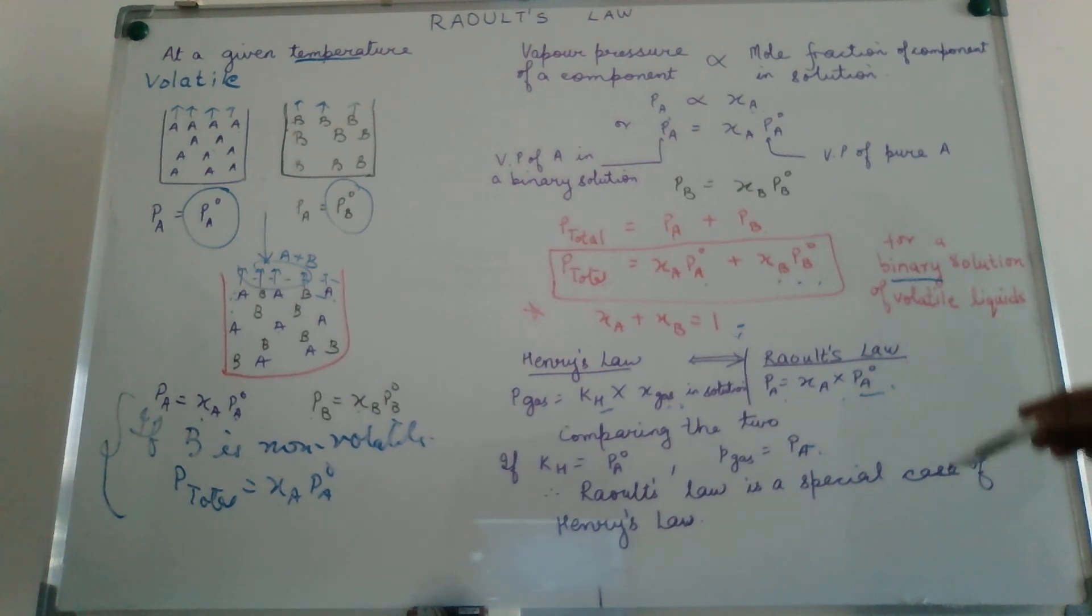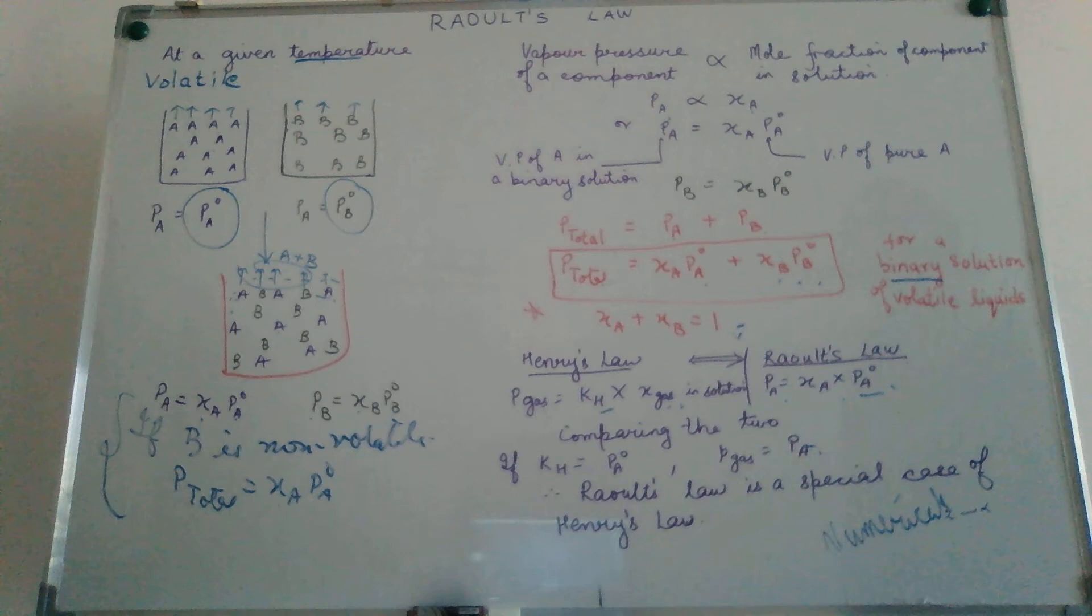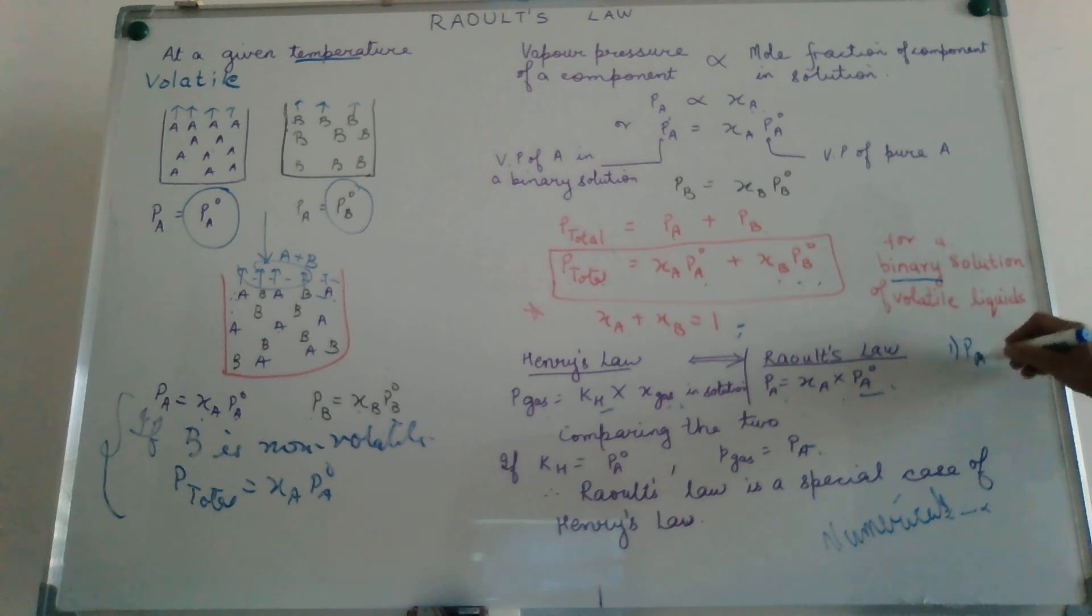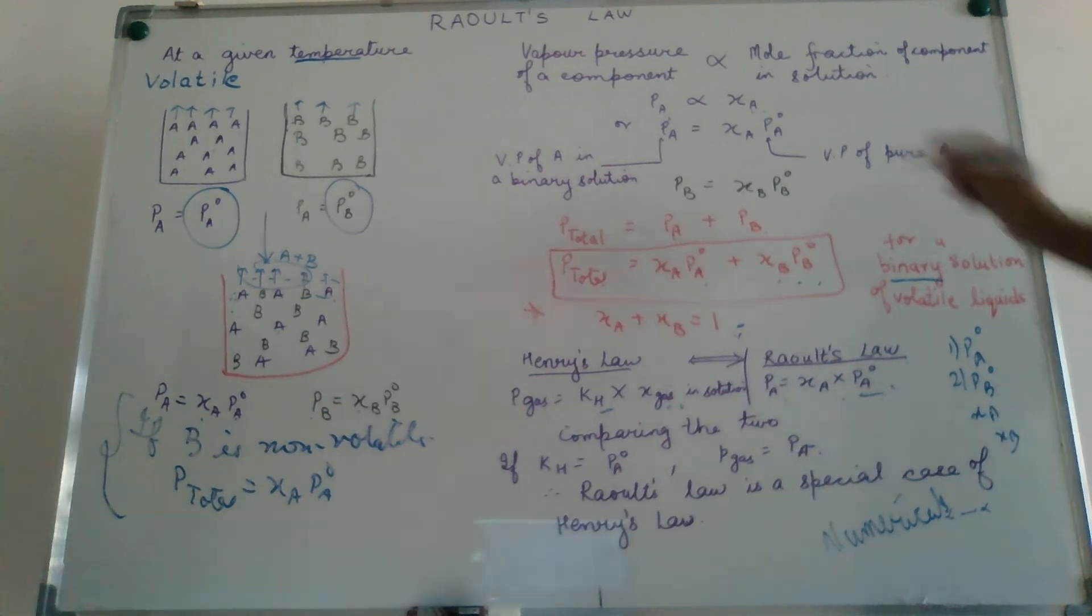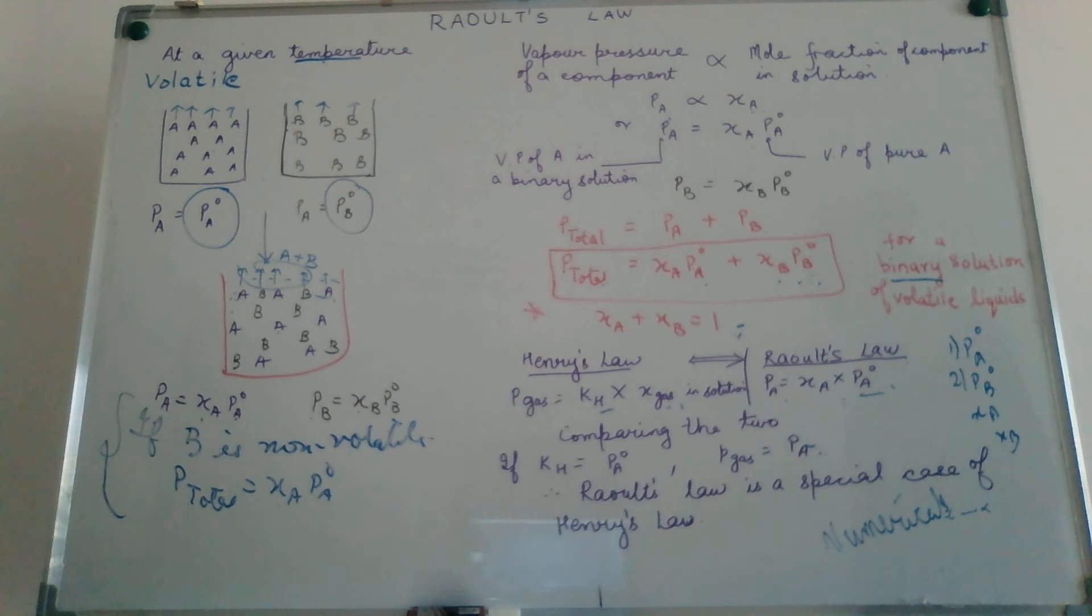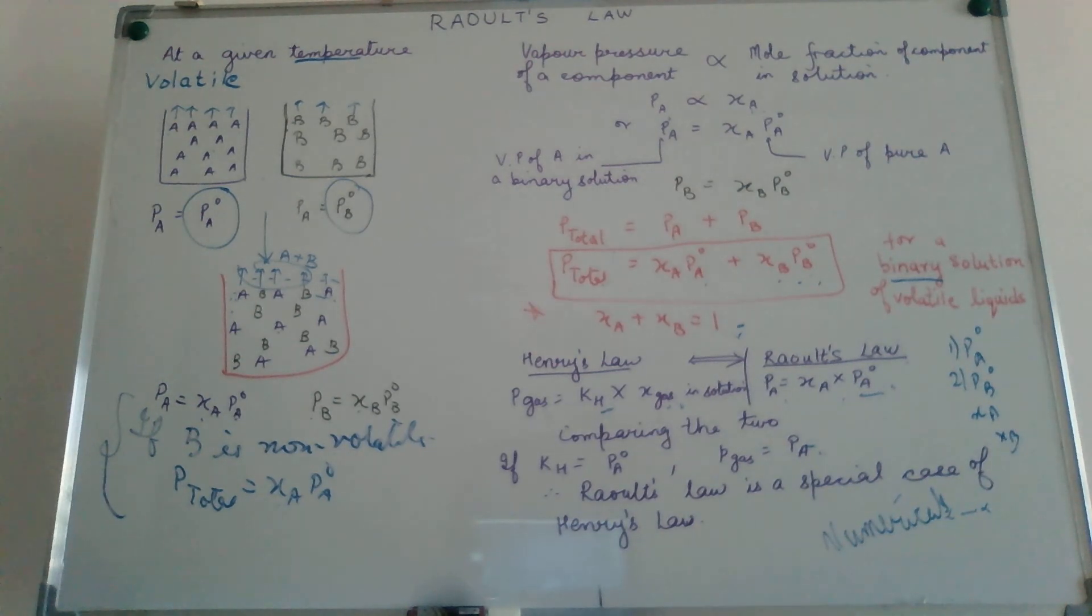Hope this clears the concept of Raoult's law. The best thing for you to do now would be to attempt at least five numericals based on this concept. When you are attempting a numerical, please remember, make sure that you list down the values which are given to you: PA0, PB0, XA, XB. And then you just have to insert it in the formula. Sometimes you may be given the total pressure and one of the other values may be missing. In that case, again, you just have to put the values and calculate according to simple equations. Hope you will do this and not disappoint me by just seeing the video and not making an attempt yourself. Good luck!